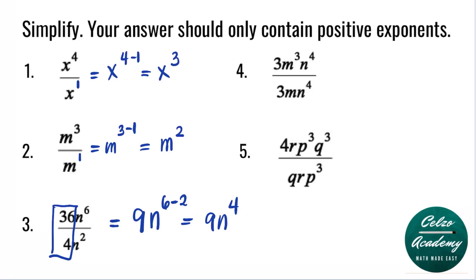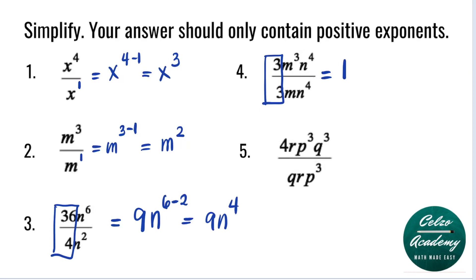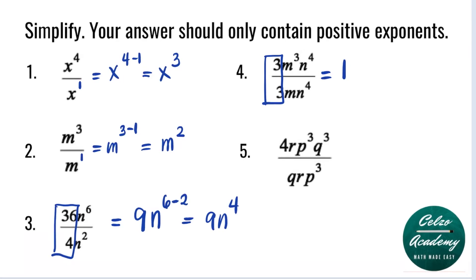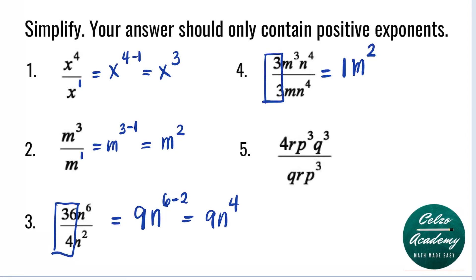Question number 4: 3m to the 3rd n to the 4th all over 3m n to the 4th. The first thing that we need to do for number 4 is divide the coefficients 3 divided by 3, and that is of course 1. Now let's simplify the variable m. We have m to the 3rd divided by m to the 1st. Subtracting the powers, we have 3 minus 1 and that is 2. For the variable n, n to the 4th divided by n to the 4th, that cancels out. So the answer is 1m squared or simply m squared.